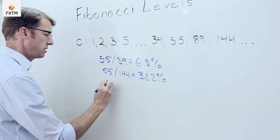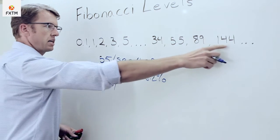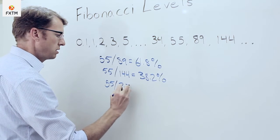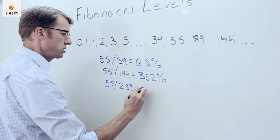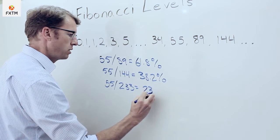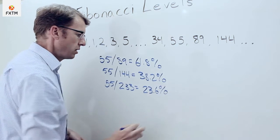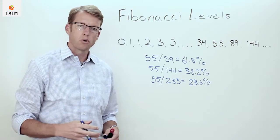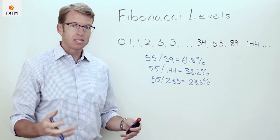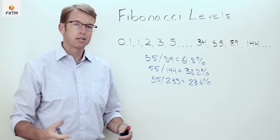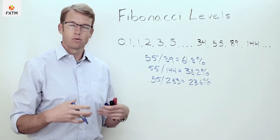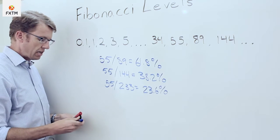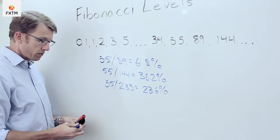What's interesting is that Fibonacci ratios show up not just in the financial markets, but in nature — in architecture, as a guide to perfect proportions. This is a very interesting ratio relationship that we can also see in reverse.